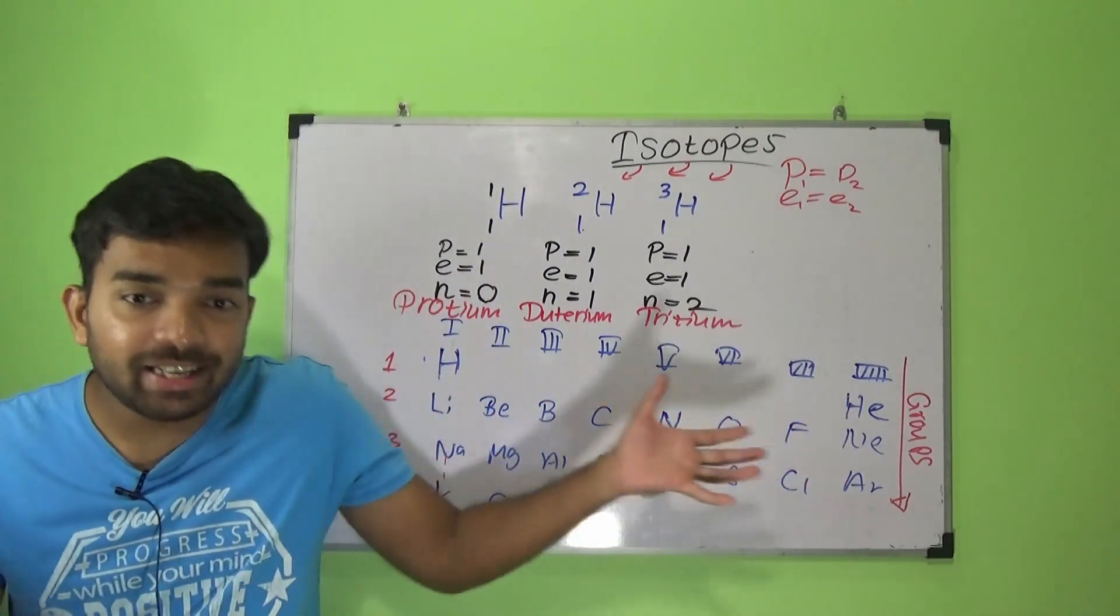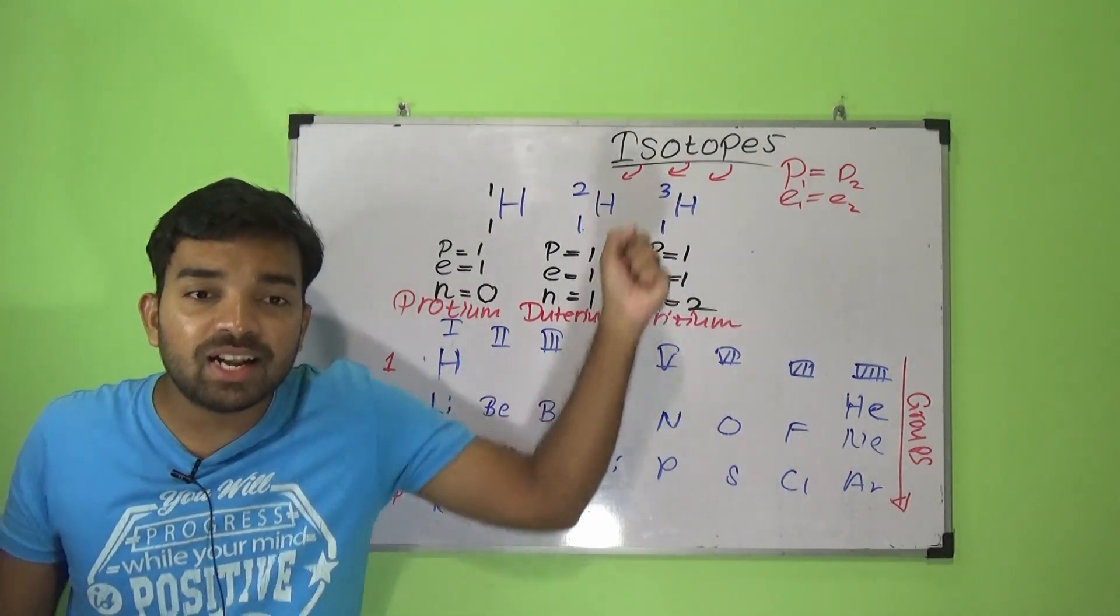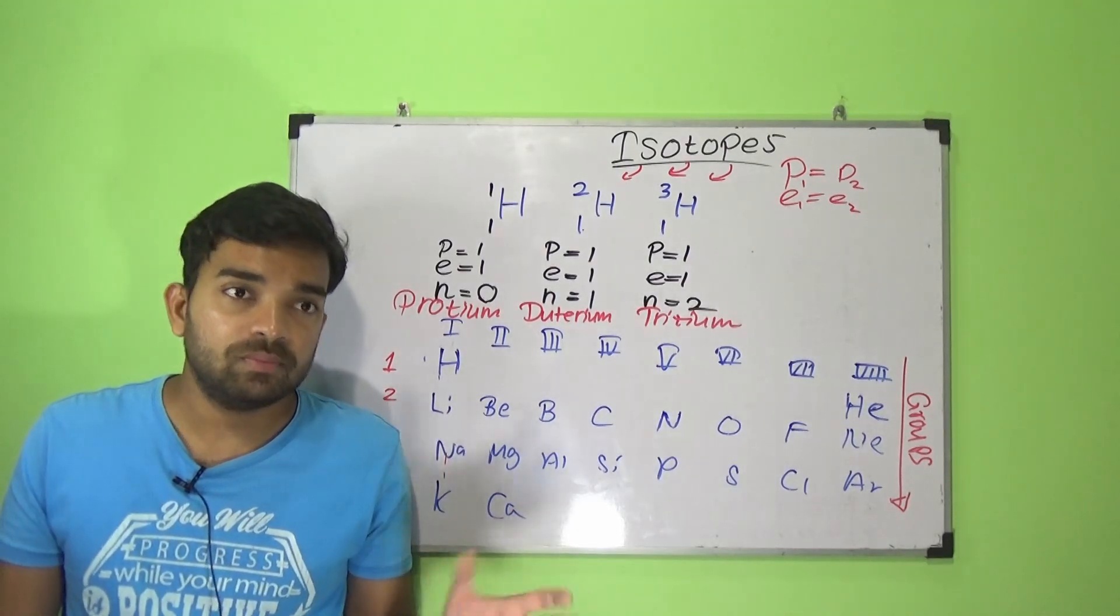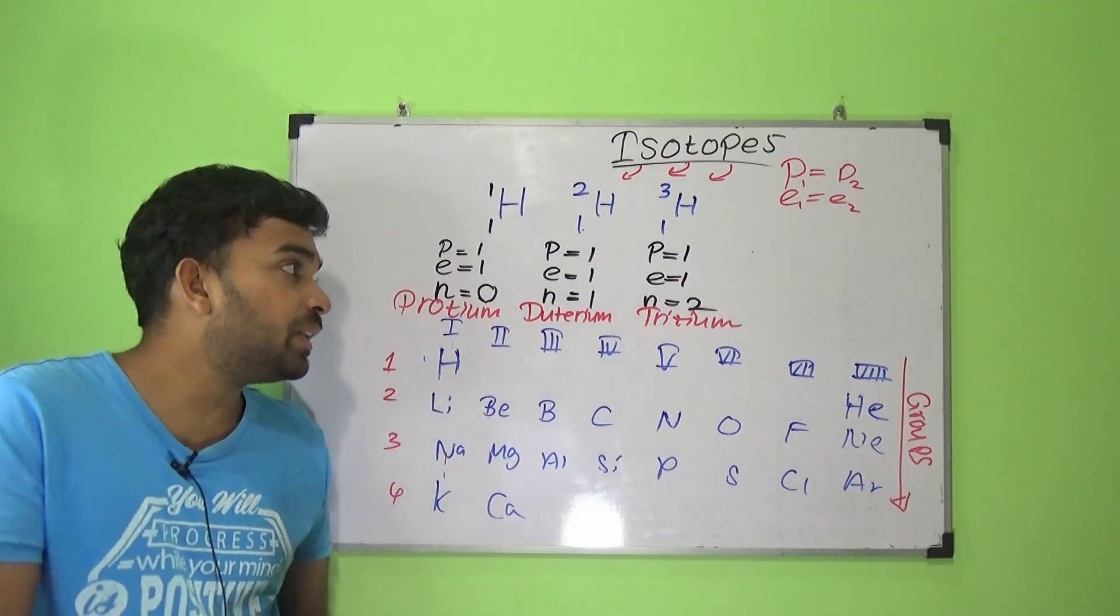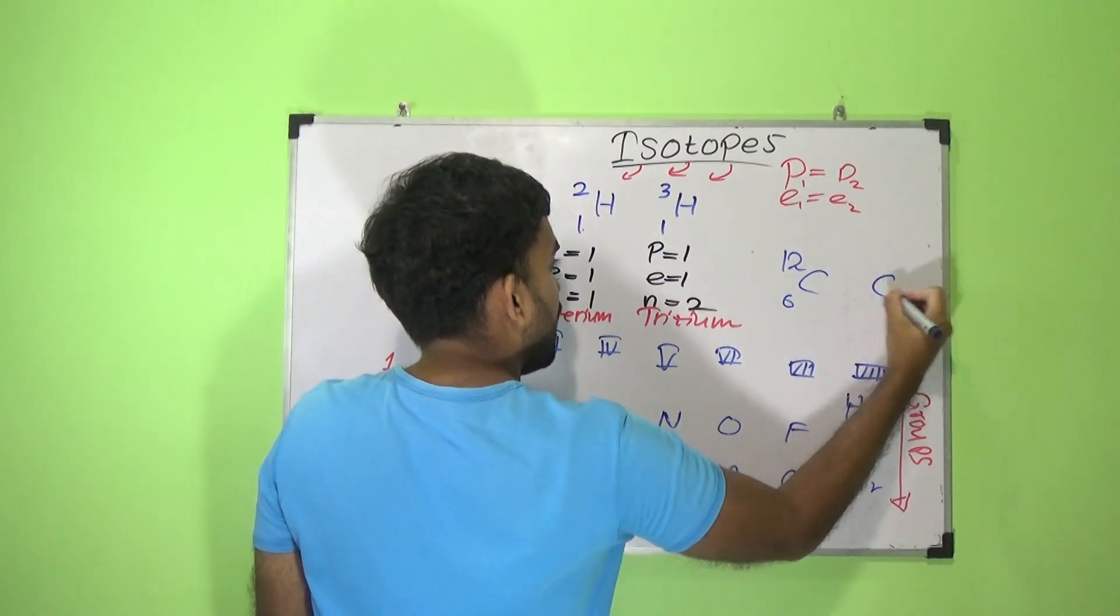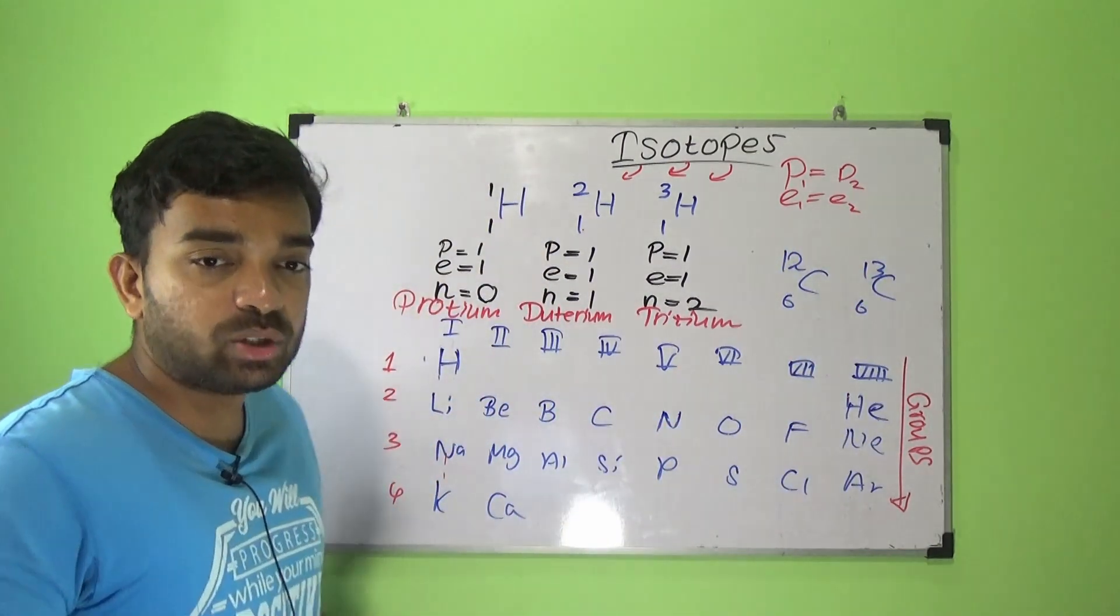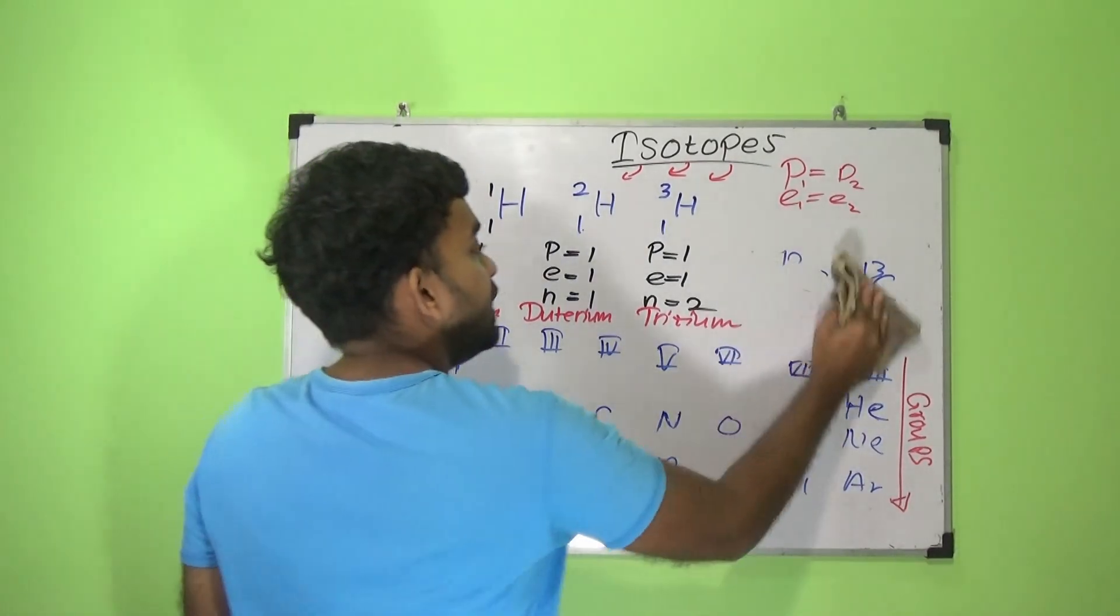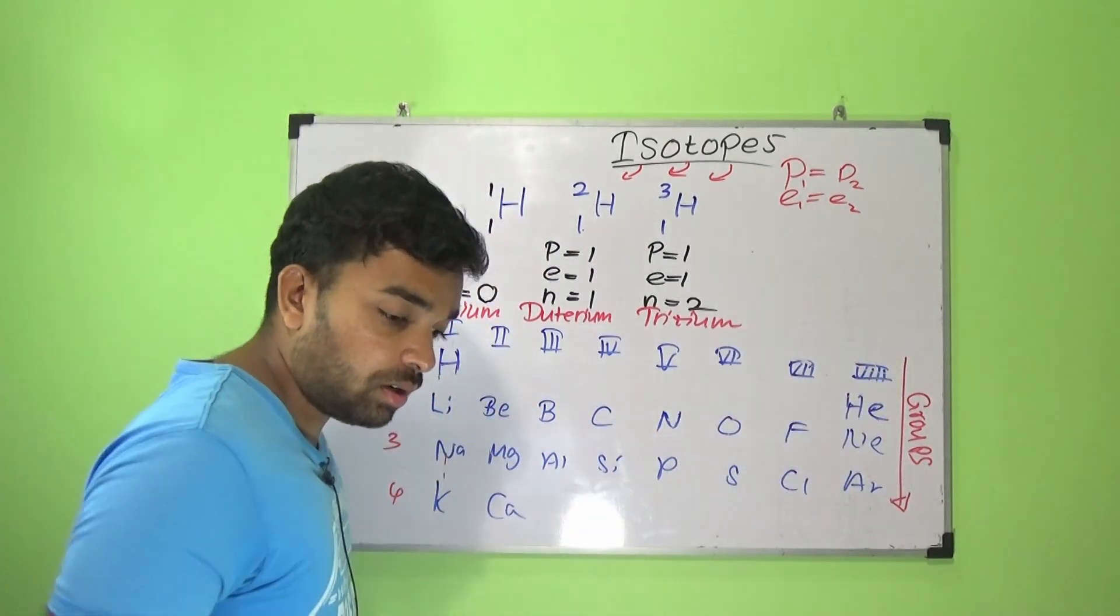In other elements, there are isotopes as well. As an example, carbon 6-12 and carbon 6-13. There are isotopes in other elements as well.